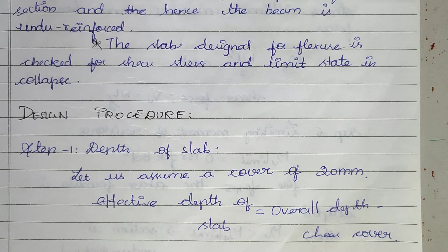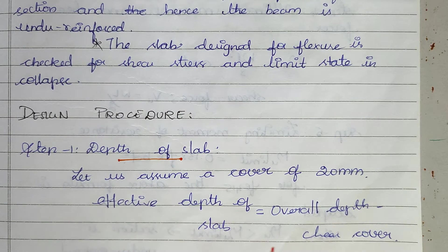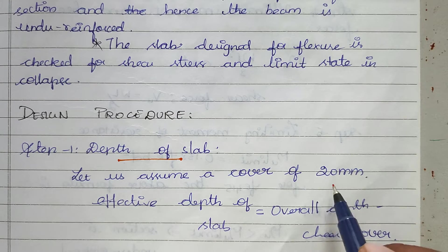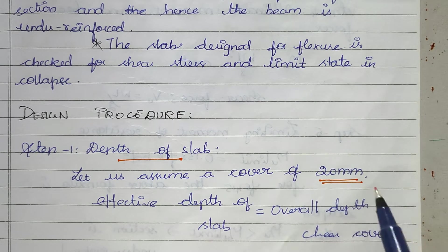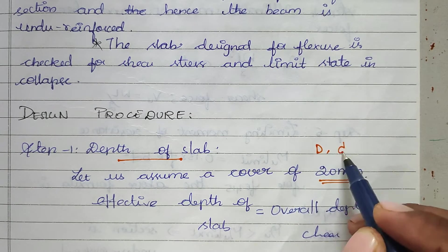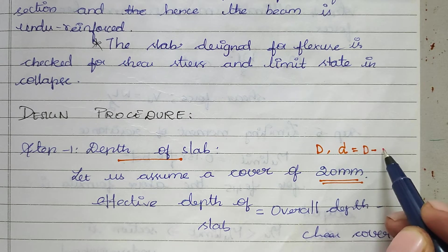The design procedure: Step 1 is depth of slab. We have to find out the depth of slab. First, assume the cover is 20 mm. There are two depths: overall depth and effective depth. Effective depth is capital D minus cover thickness.